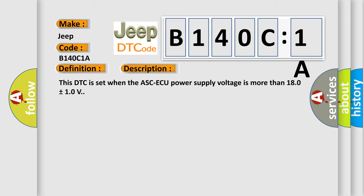This DTC is set when the ASC ECU power supply voltage is more than 18.0 plus or minus 1.0 volts.